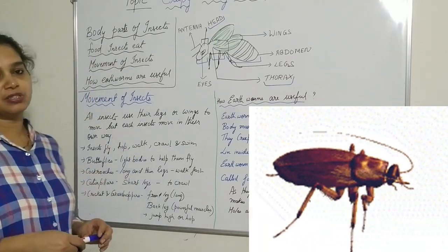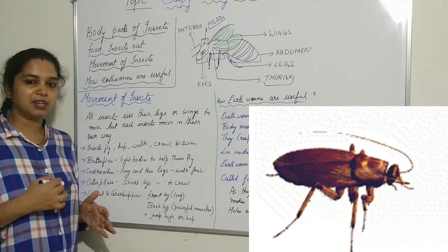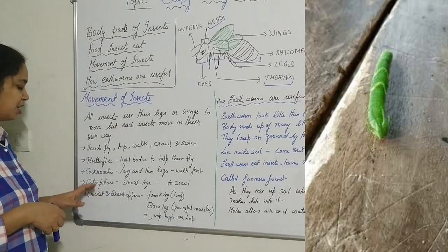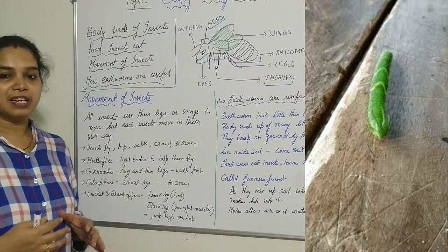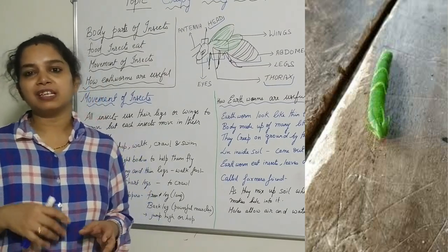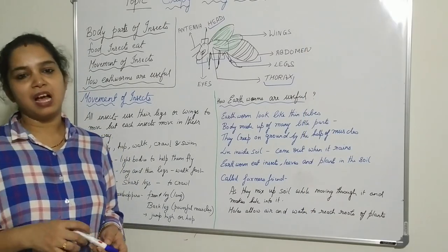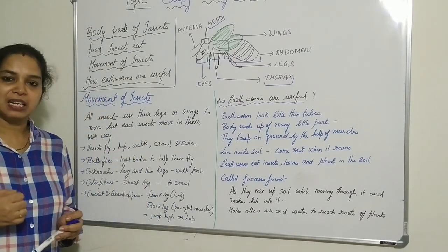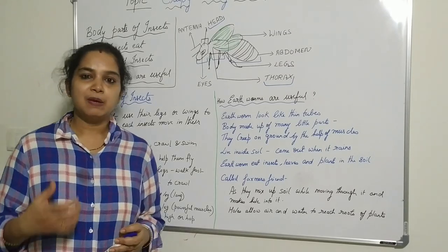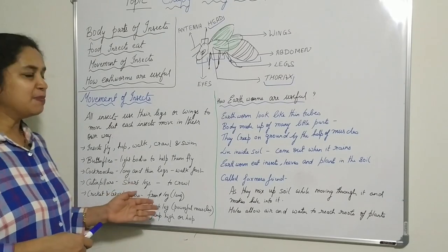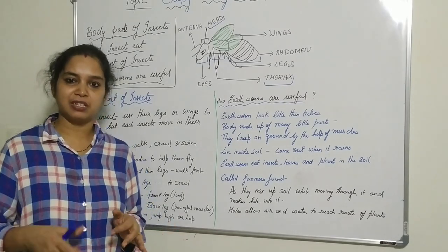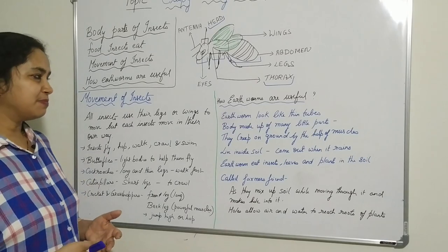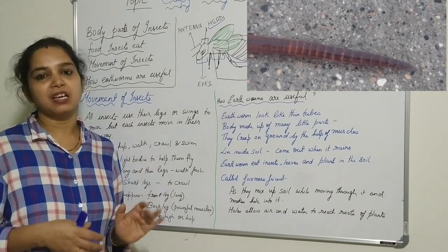Butterflies have a very light body that helps them fly. Cockroaches have very long, thin legs so that they can walk very fast on the ground. Caterpillars have very short legs so that they can crawl on leaves and branches of trees. Crickets and grasshoppers have strong back legs with very strong muscles, allowing them to jump very high and hop with ease.